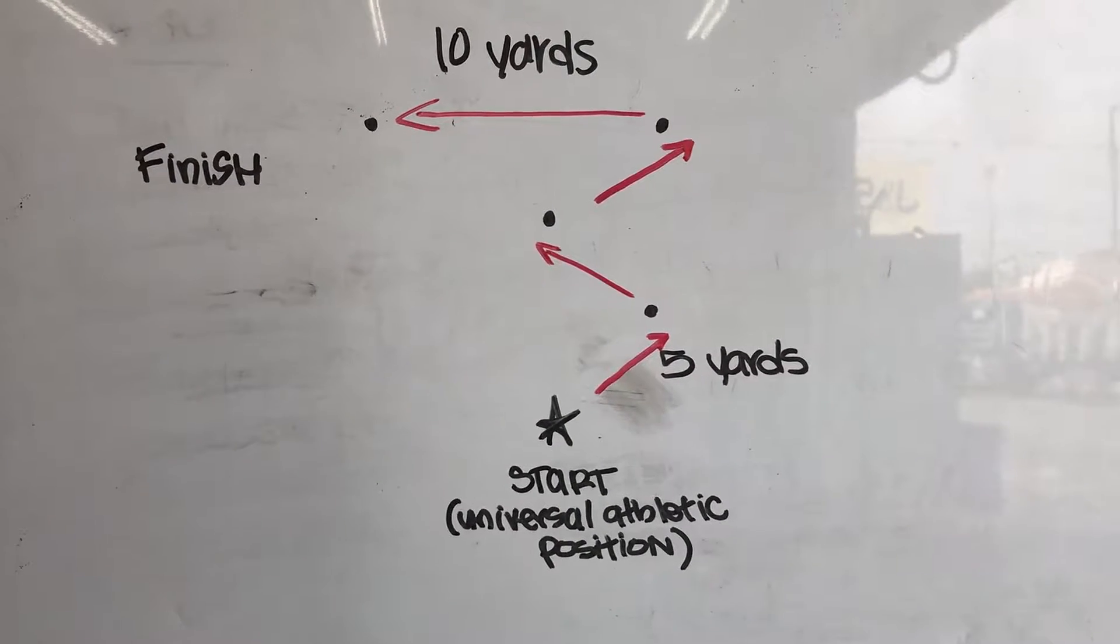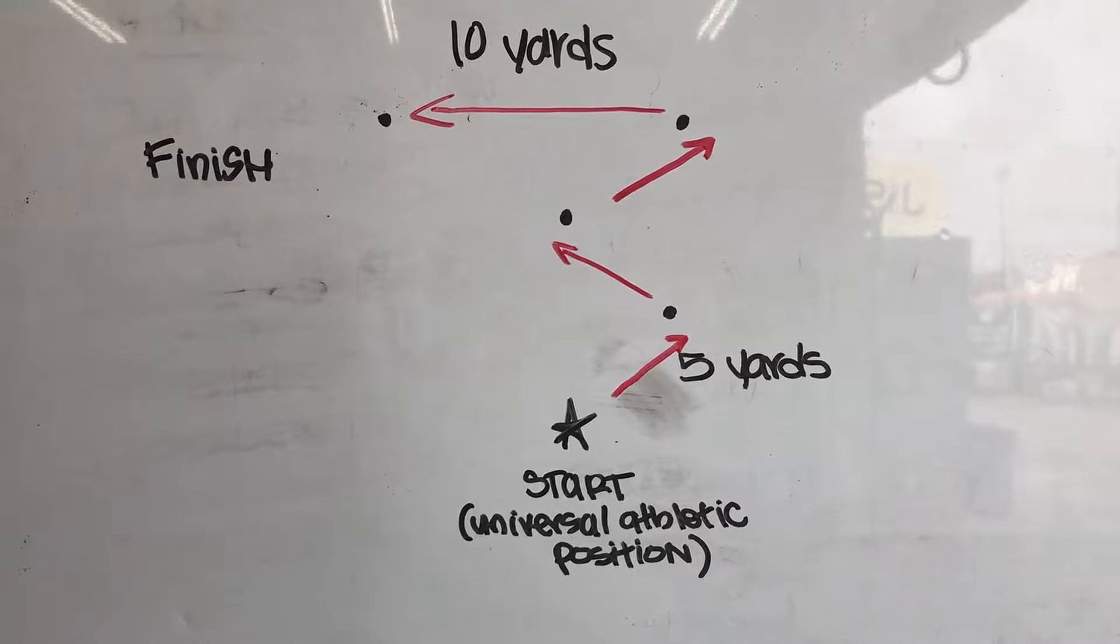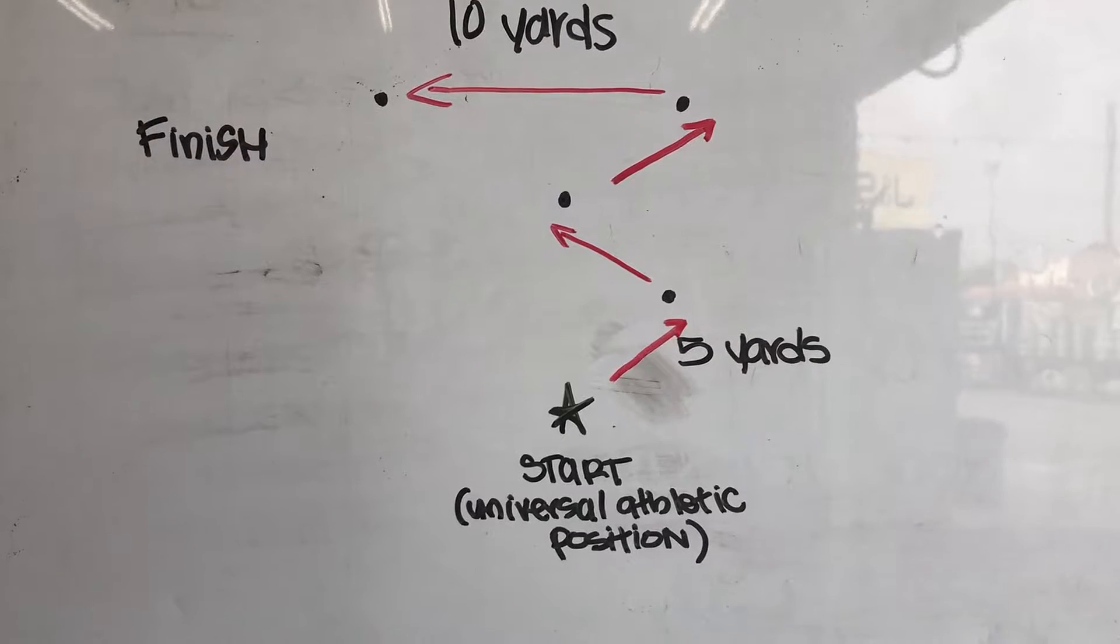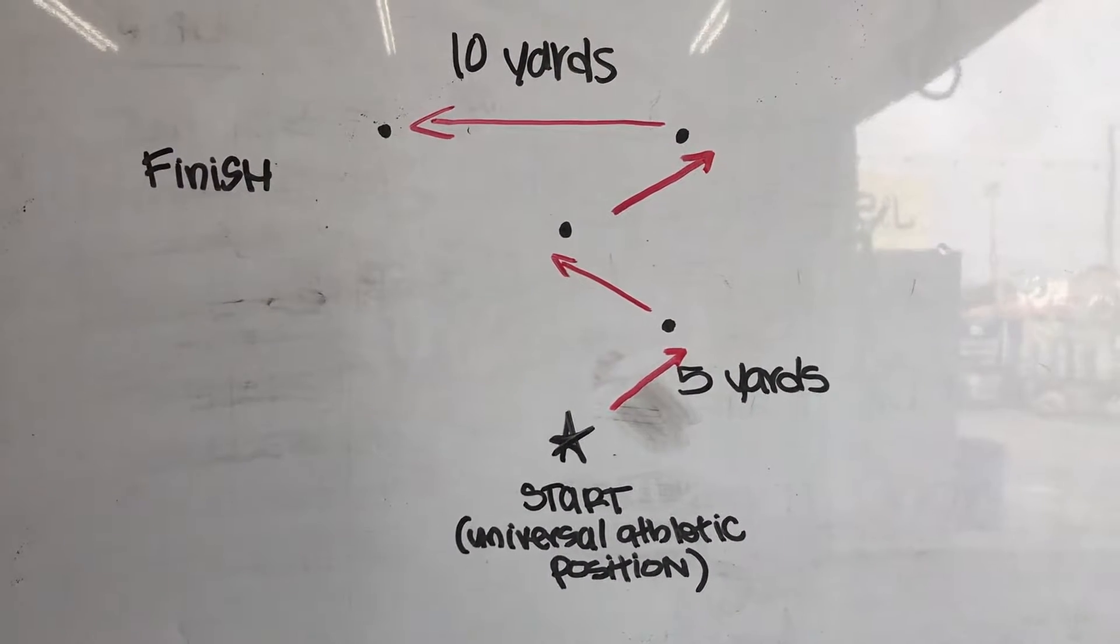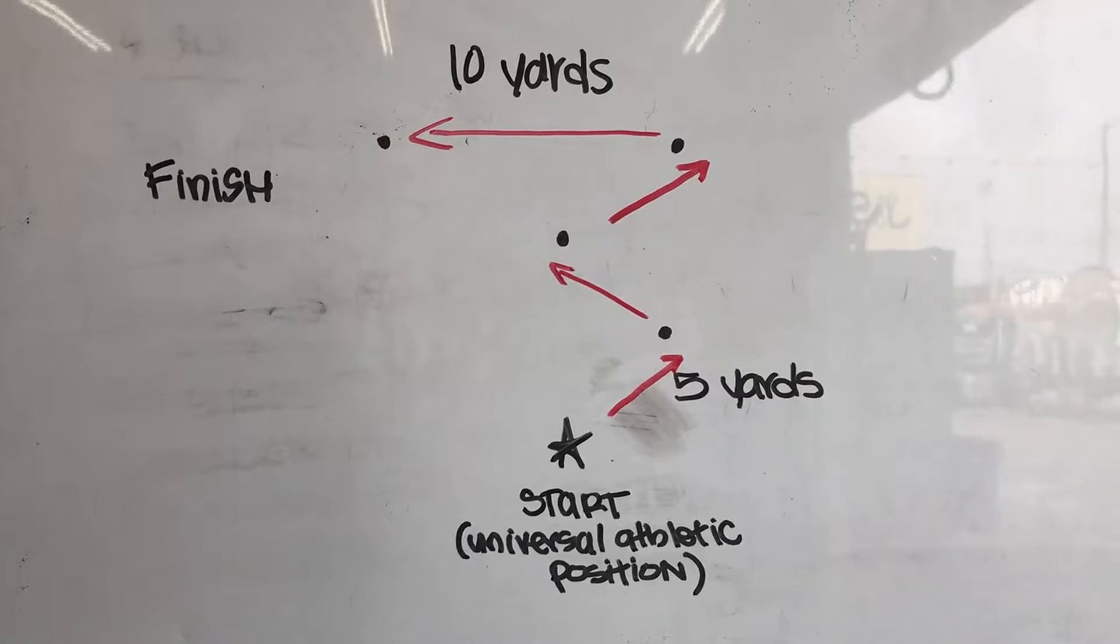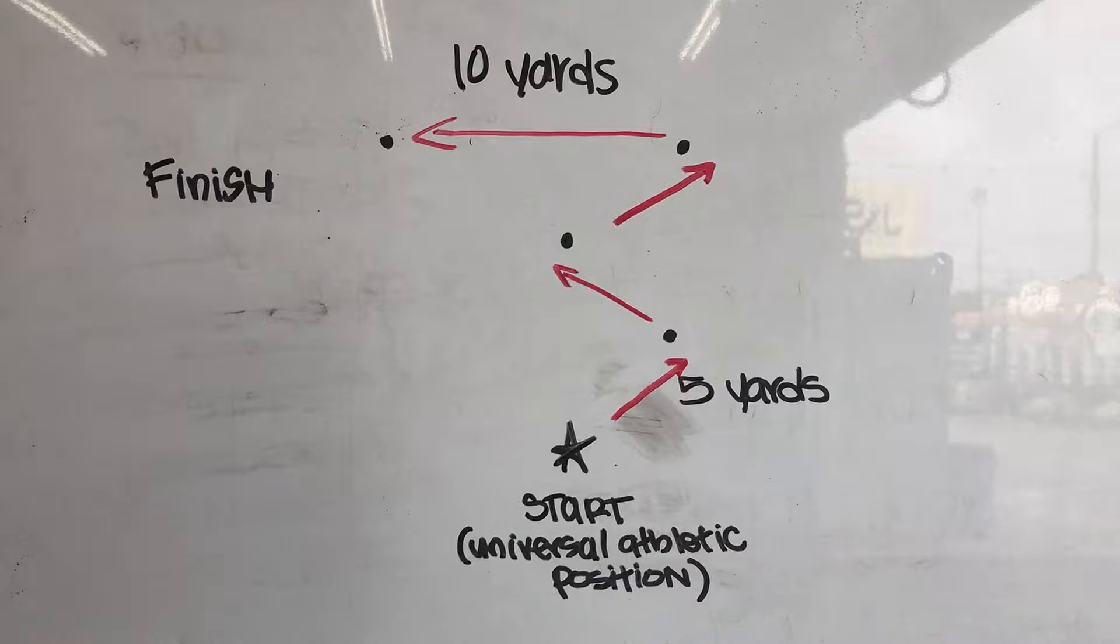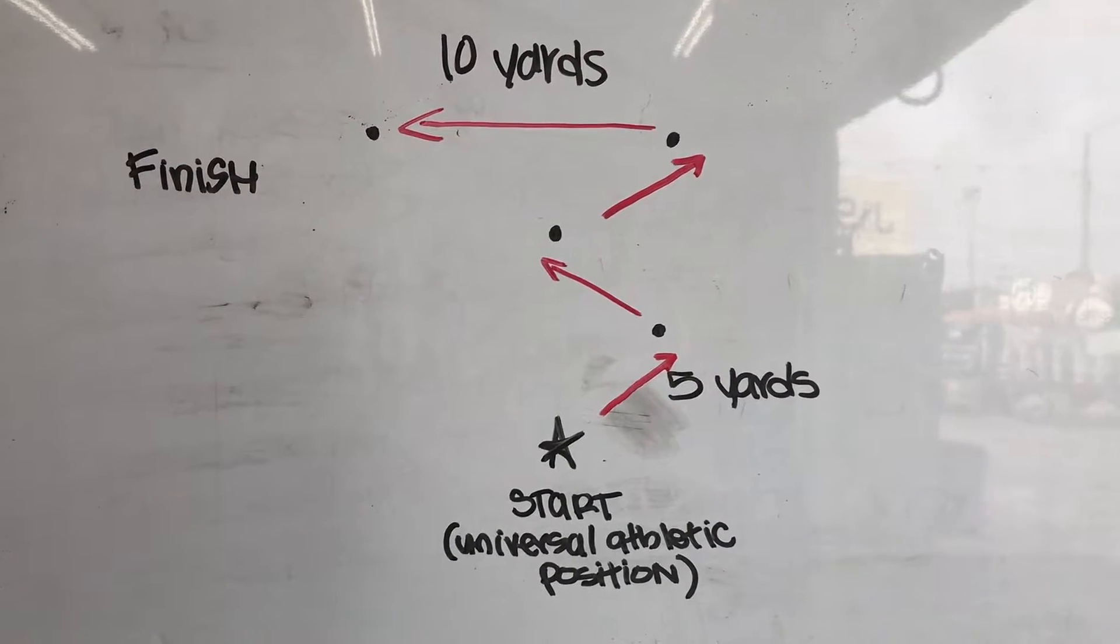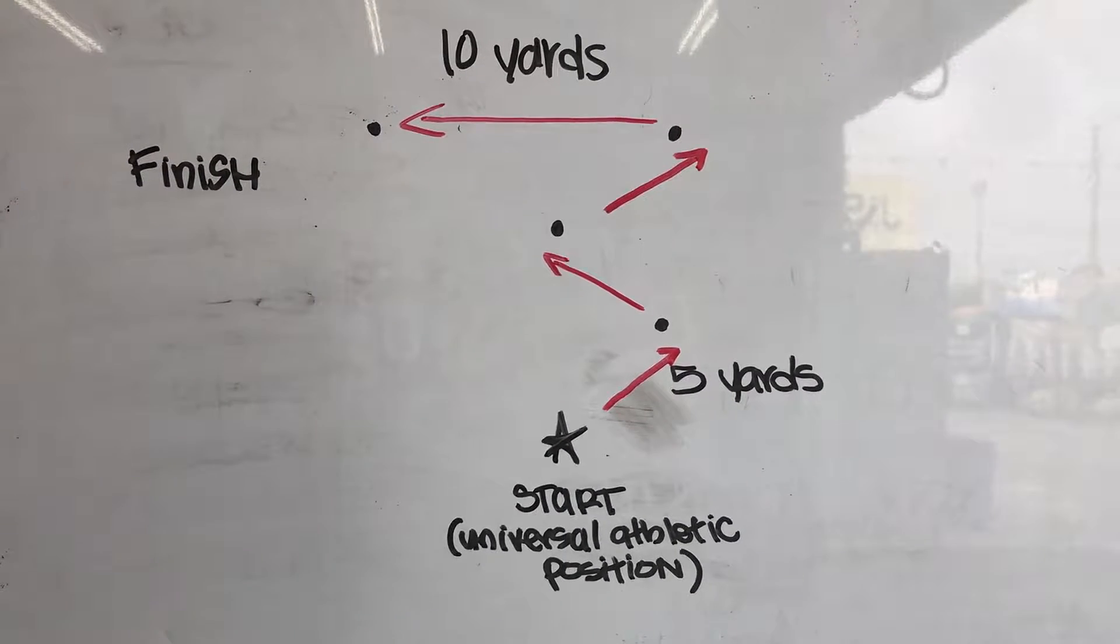Zig-zag drill number one. You're gonna start at the star in the universal athletic position—that's a wide stance. Your feet are gonna be side by side, parallel to each other. On the go, you're gonna go to the right, stay tight around the turn. That's gonna be five yards away. You're gonna decelerate and turn to your left.